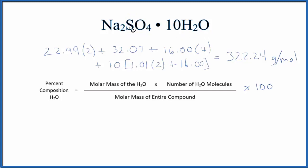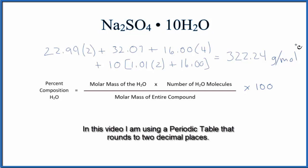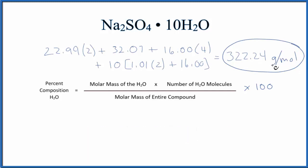What we'll do is find the molar mass of the entire compound. First we find the sodium sulfate, and we find the 10 water molecules. When we do that, we end up with a molar mass for the entire compound of 322.24 grams per mole.